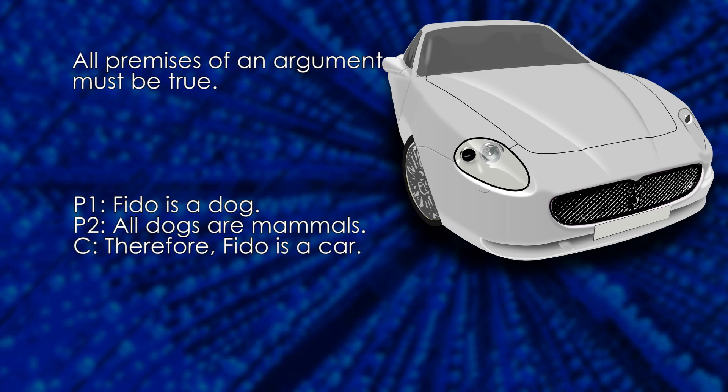Both premises are still true, assuming once again that the name Fido actually refers to a dog in this context. But obviously Fido is not a car. Both premises are true, but the conclusion isn't. This is possible because the logic, the form of the argument, is flawed. The conclusion doesn't follow from the premises. The argument is not valid.